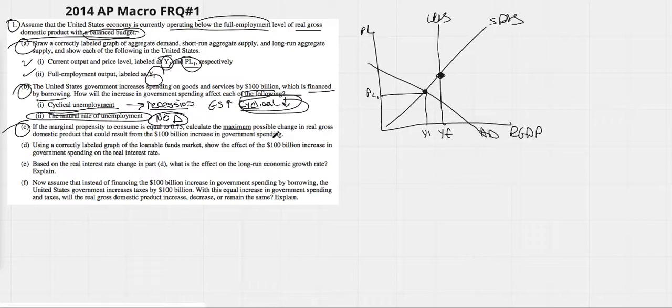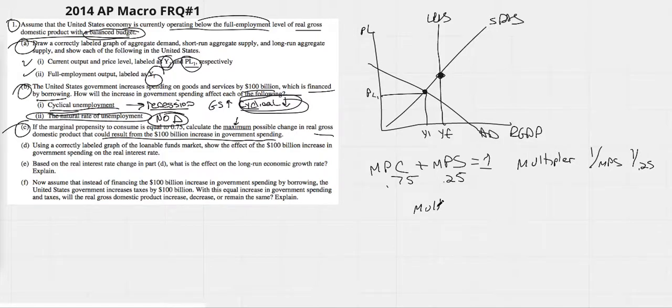If the marginal propensity to consume is 0.75, calculate the maximum possible change in real GDP that could result from the $100 billion increase in government spending. If our MPC is 0.75, that means we know our MPS is 0.25 because together both of these are going to equal one. To find our multiplier, it's simply one over the MPS or one over 0.25. So our multiplier is going to be four. The government spends $100 billion times the multiplier, which is going to give us a $400 billion increase in real GDP.